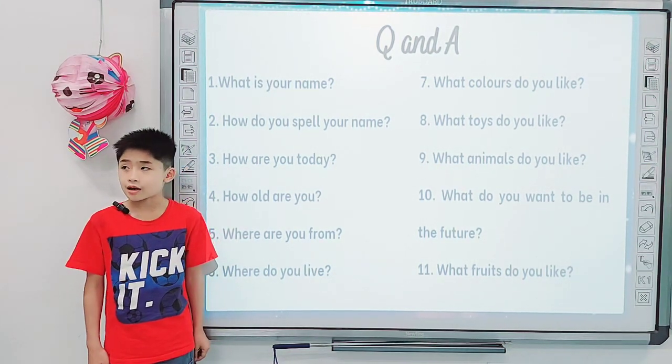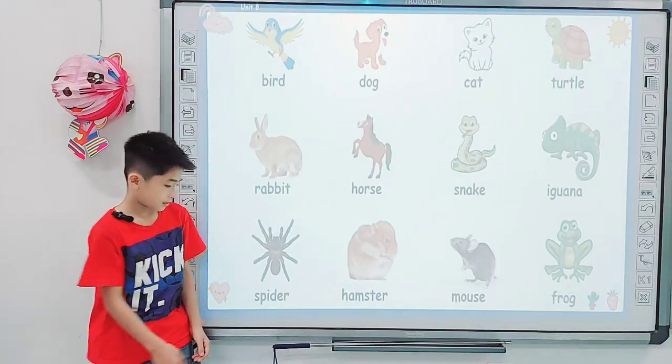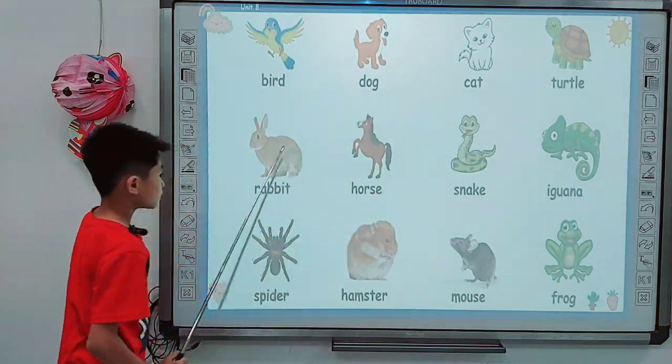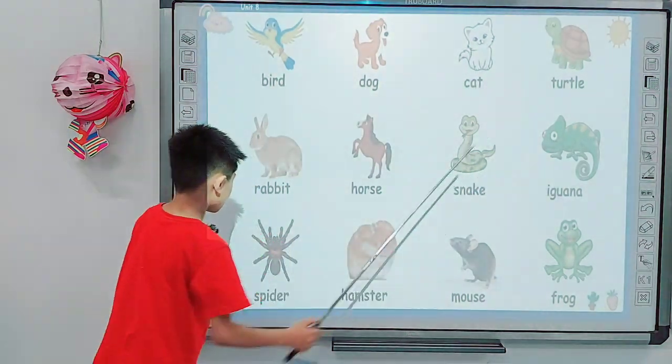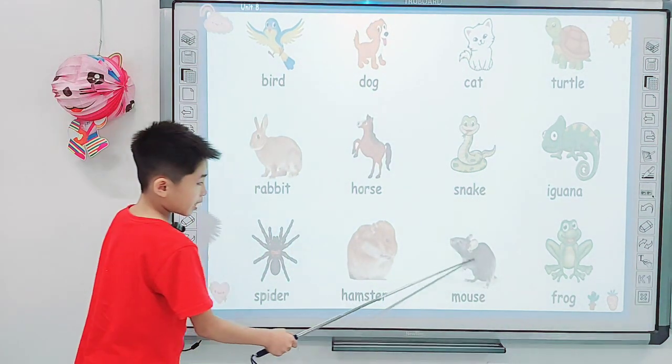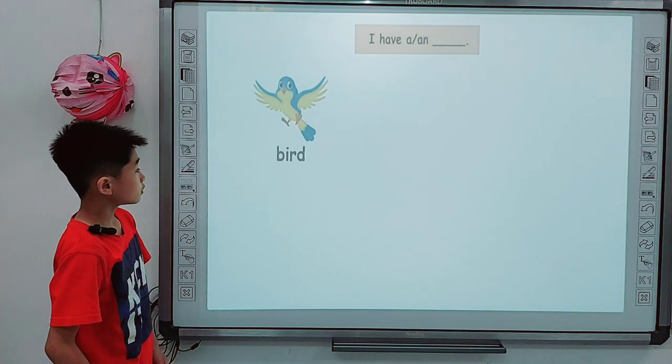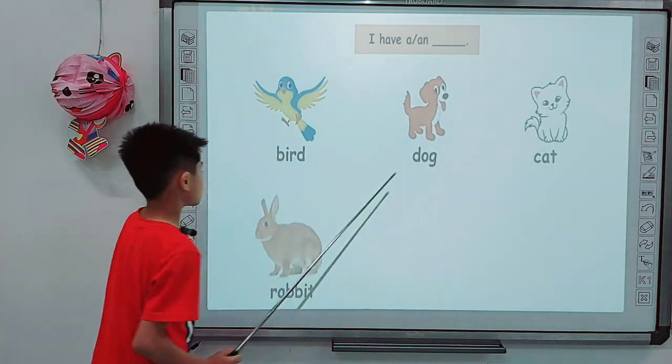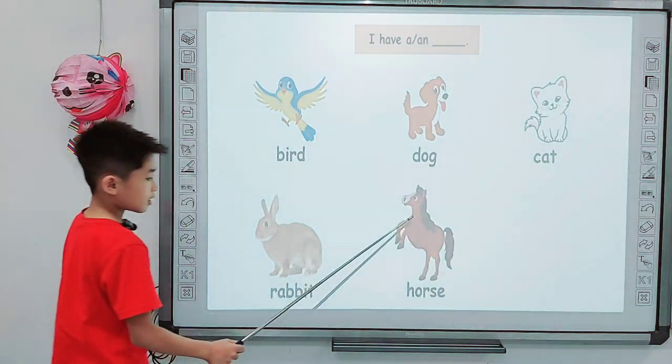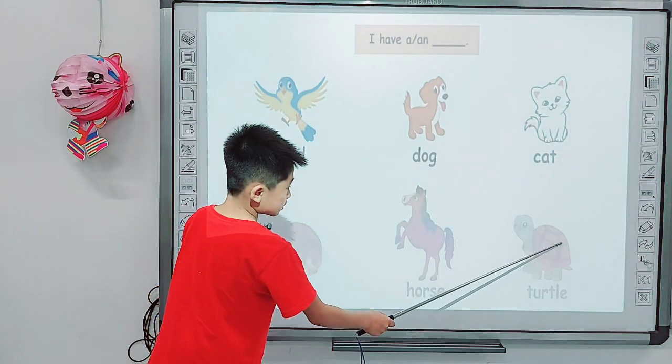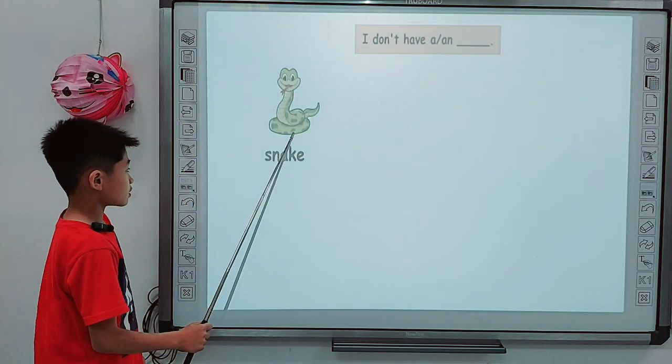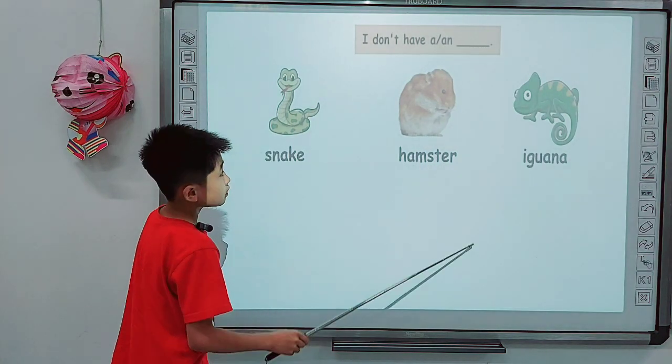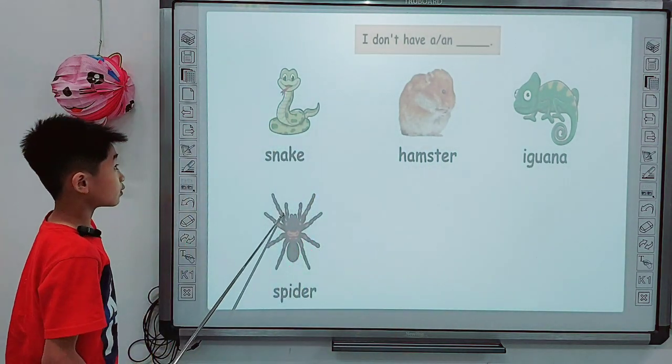We can look at screen. When I say the words: mouse, dog, cat, turtle, rabbit, horse, snake, iguana, spider, hamster, mouse, frog. Next one, let's say the sentence. I have a horse, I have a dog, I have a cat, I have a rabbit, I have a horse, I have a turtle. I don't have a snake, I don't have a hamster, I don't have an iguana, I don't have a spider, I don't have a mouse, I don't have a frog. Good job.